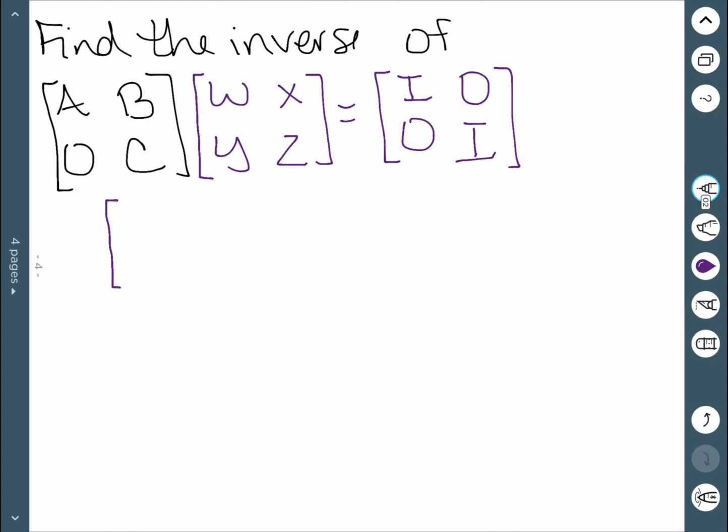In addition, we're going to assume that all of our matrices here are square, which is an assumption that we'll need to finish solving this. Multiplying would give me AW plus BY. The next entry, AX plus BZ. The second row, I would have zero times CY and zero times CZ. And this would still need to be equal to the identity.